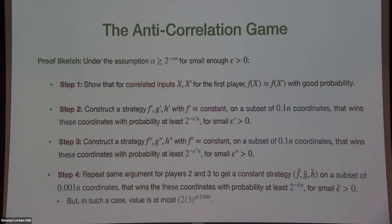Once we have a constant strategy, it is independent across coordinates, giving an upper bound of (2/3)^{n/1000} on the winning probability. This contradicts alpha ≥ 2^{-ε̃·n} for small enough ε̃. This approach differs fundamentally from two-player techniques: instead of an embedding approach, we use local correlations in the winning set to generate a global strategy for the players.